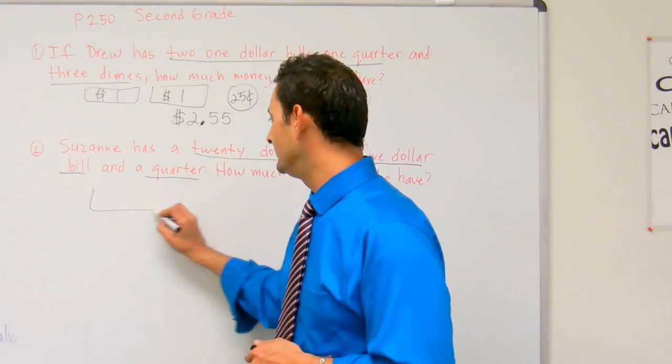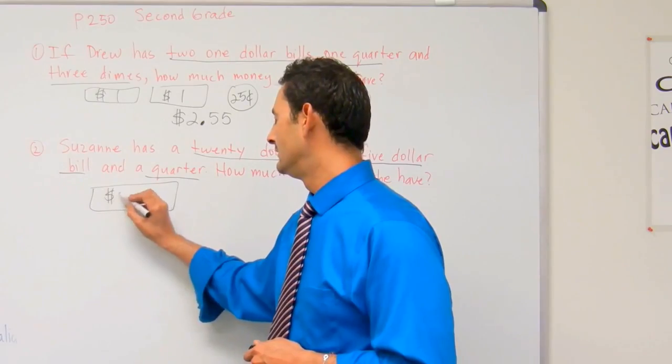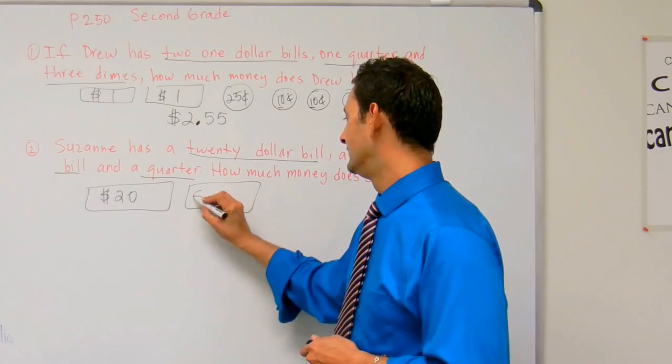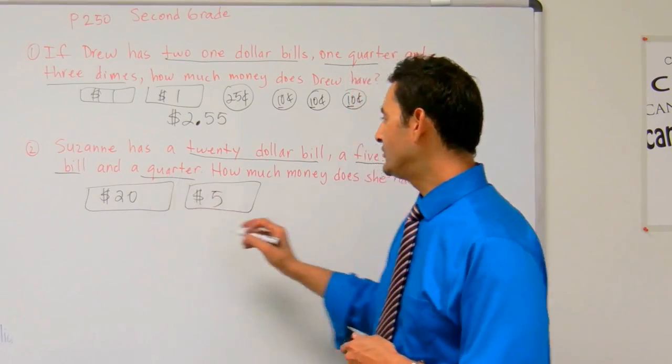So she has a twenty dollar bill, she has a five dollar bill, and she has a quarter.